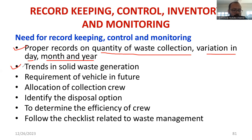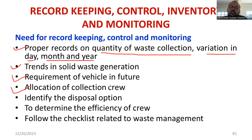Records help determine the requirement of vehicles in the future — whether the waste management workers are getting burdened, and whether the available vehicles are sufficient. Similarly, allocation of collection crews can be understood: which direction people are moving, whether toward the western or northern direction, and whether the crew is free or overburdened.